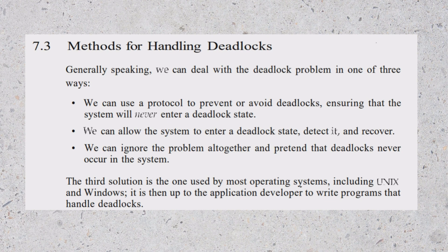Methods for Handling Deadlocks: Generally speaking, we can deal with the deadlock problem in one of three ways. First, we can use a protocol to prevent or avoid deadlocks, ensuring the system will never enter a deadlock state. Second, we can allow the system to enter a deadlock state, detect it, and recover. Third, we can ignore the problem altogether and pretend deadlocks never occur. The third solution is the one used by most operating systems, including Unix and Windows, leaving it to the application developer to write programs that handle deadlocks.